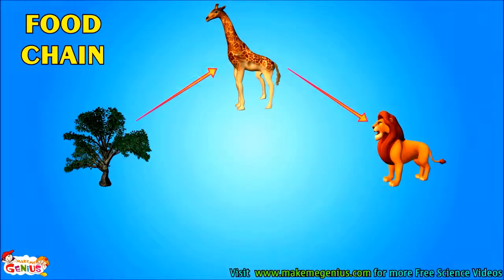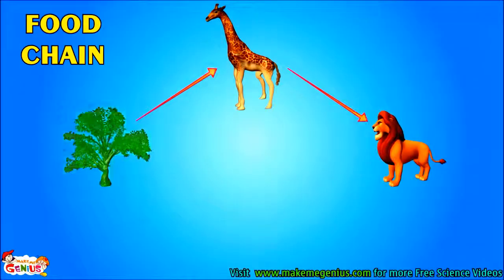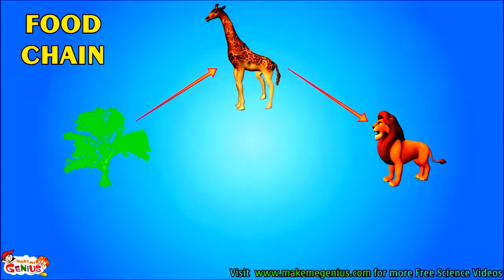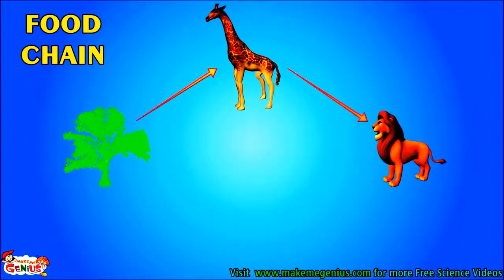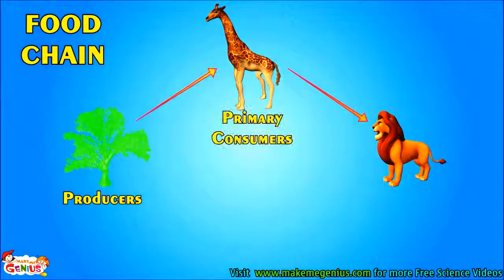So plants make their own food, other animals eat plants, and some other animals eat those animals who eat plants. So all are dependent on plants. This is also called a food chain, and it starts from plants. In the food chain, plants are known as producers as they produce food.